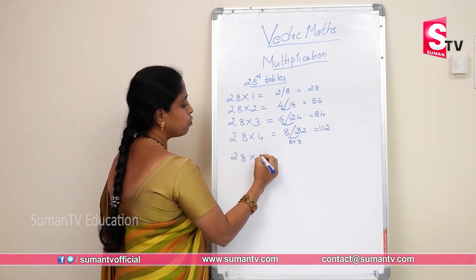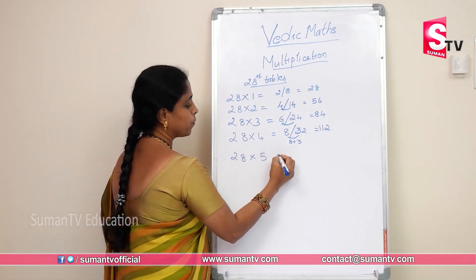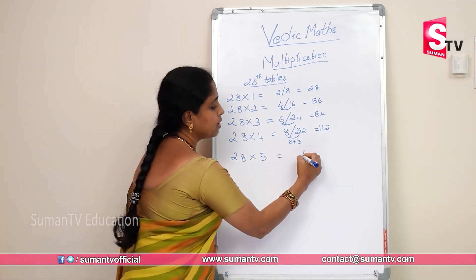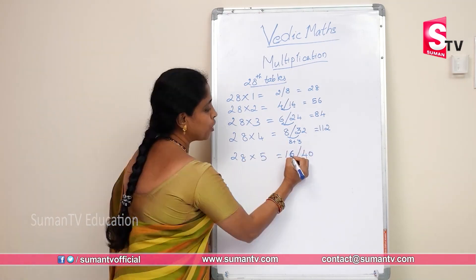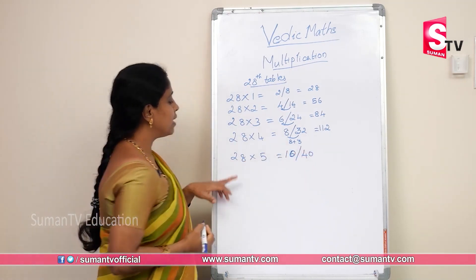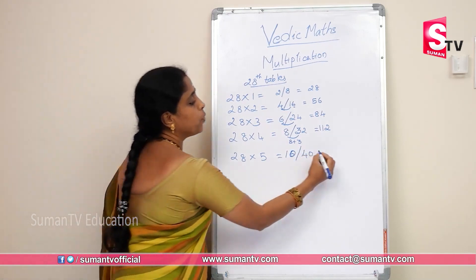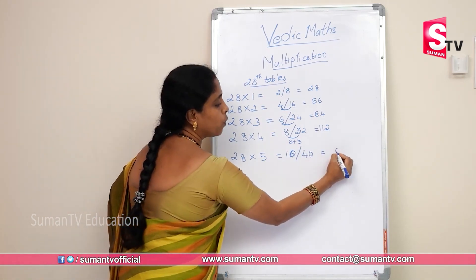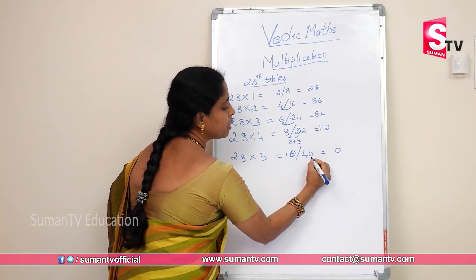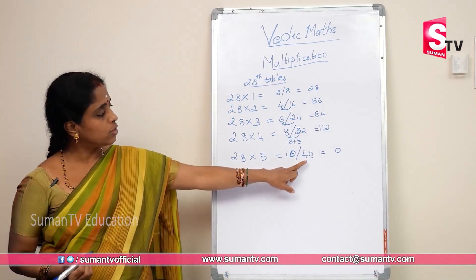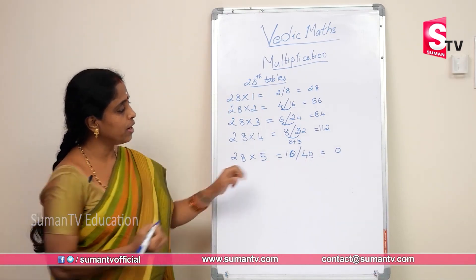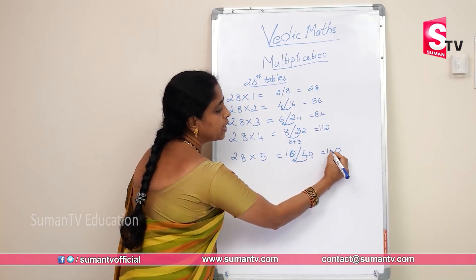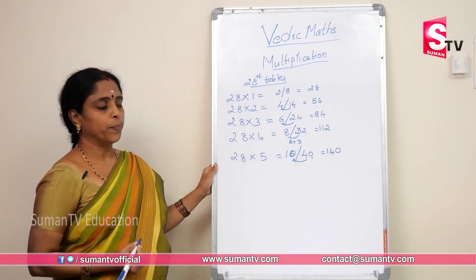28 into 5. 5×8 = 40. 5×2 = 10. In units place write 0, end number 0. Carry the 4, add to get 2 and 4. We will be getting 140.